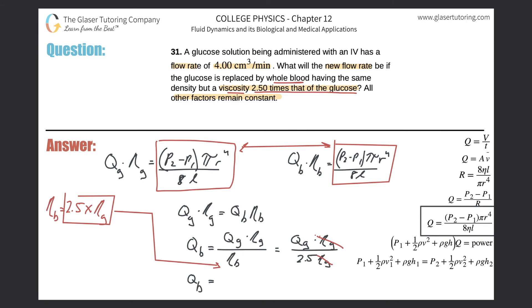So now this is going to be the flow rate of glucose which is 4.00 cubic centimeters per minute. Now I'm not going to change the units. You can if you want cubic meter per second. Doesn't matter. But this is just a simple ratio.